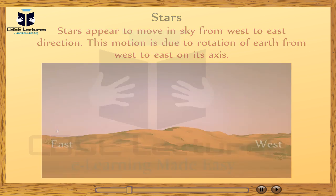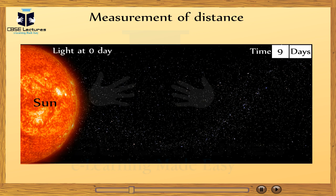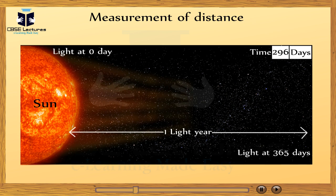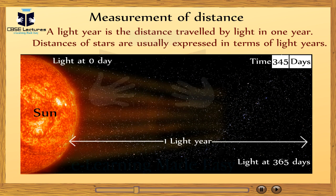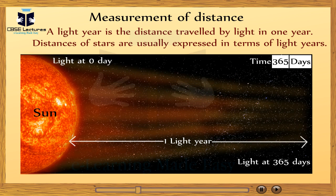Do you know how we can measure distance in the universe? The inter-stellar or inter-galactic distances are too big to be easily expressed in terms of kilometers. Hence, we need a more convenient unit to express them. A light year is the distance traveled by light in one year. Distances of stars are usually expressed in terms of light years.